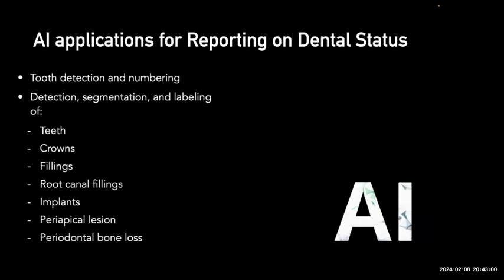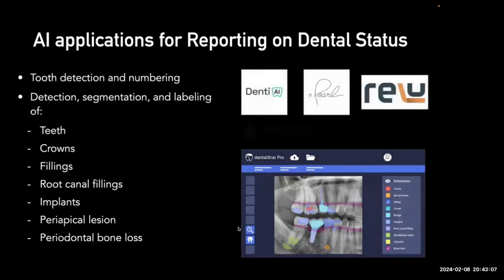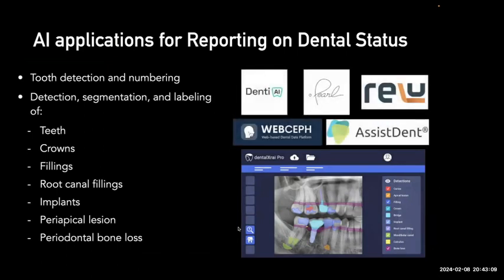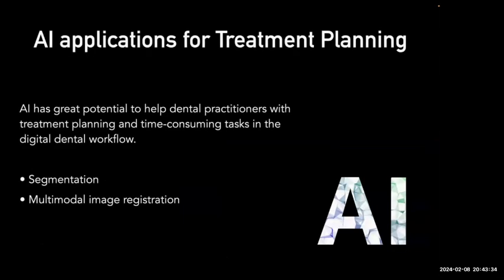AI applications are now commercially available for reporting on dental status: tooth detection and numbering, detection, segmentation and labeling of pathologies, teeth, crowns, fillings, root canal fillings, implants, periapical lesions, and periodontal bone loss. Many of us are already using some of these applications in clinical settings, and as research progresses we expect more accurate and reproducible results from these commercially available platforms.